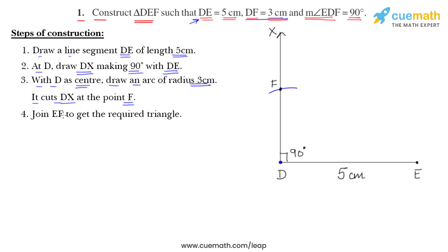Next step, join EF to get the required triangle. We will join EF to get the required triangle and DF is 3 cm. DE is 5 cm and angle D is 90 degrees and we get our required triangle. Triangle DEF is the required triangle.